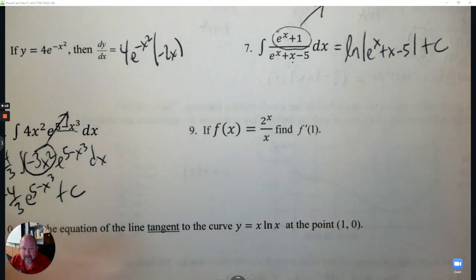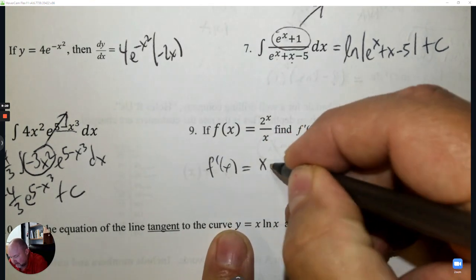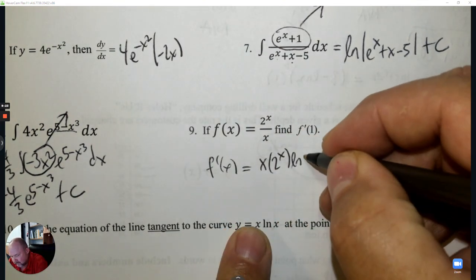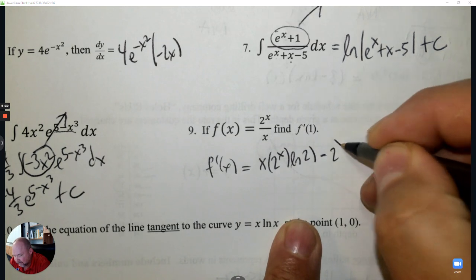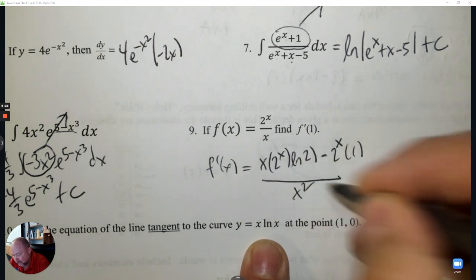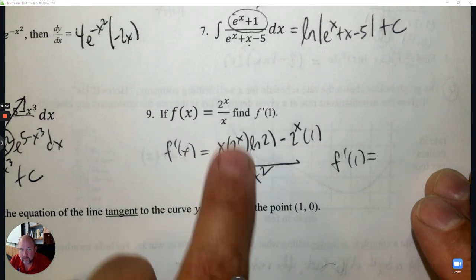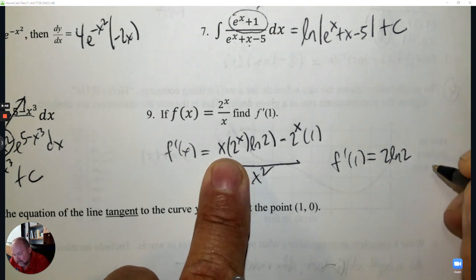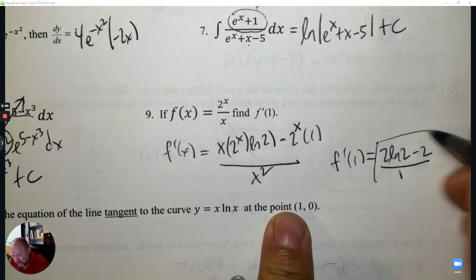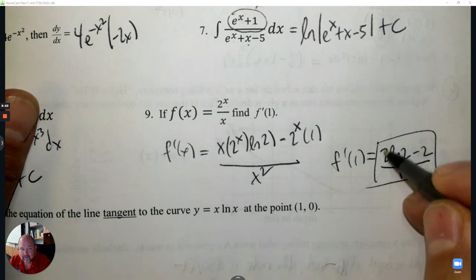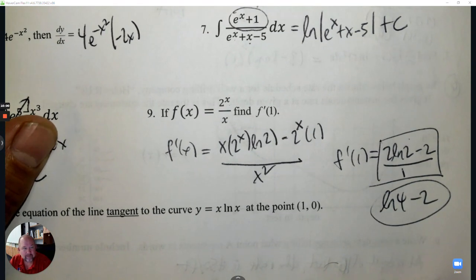Number 9: If f(x) equals this, find the derivative. This is the quotient rule — the bottom times the derivative of the top. The derivative of 2^x is copy it, but it needs a friend ln 2. Minus the top times the derivative of the bottom, all over the bottom squared. Plug in 1 everywhere: 1 times 2^1 is 2, minus 2, divided by 1. You could also write ln 4 minus 2 — that's a good final answer.